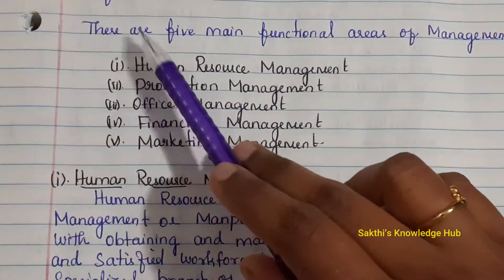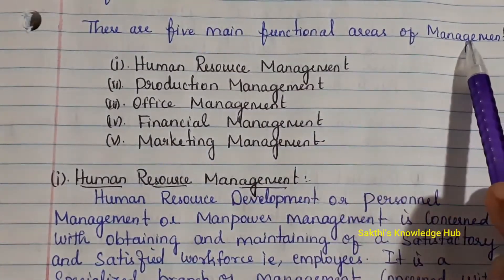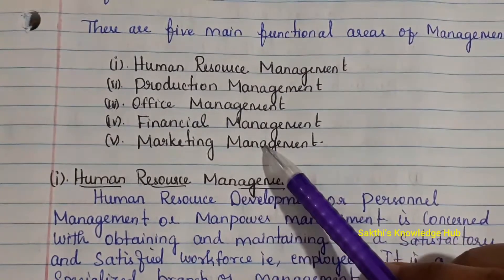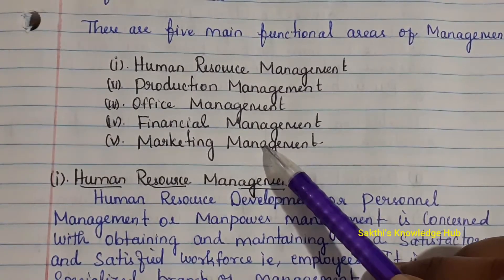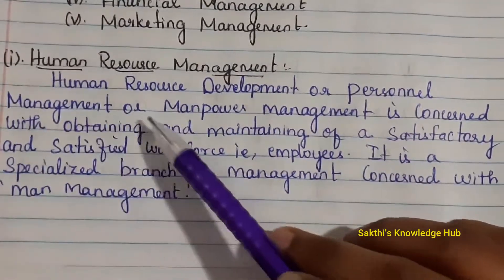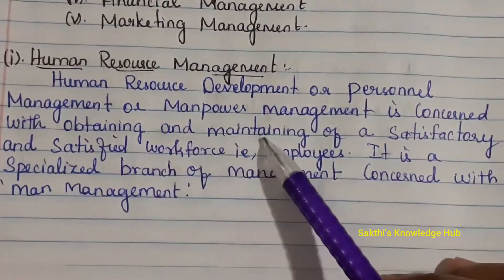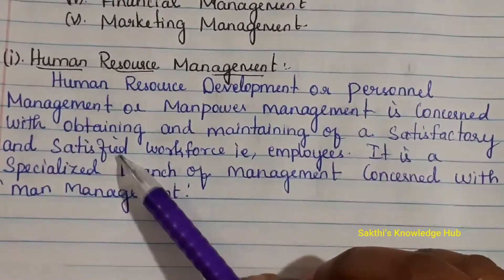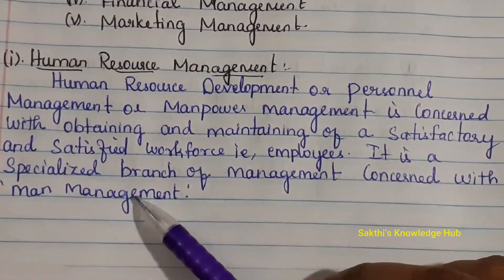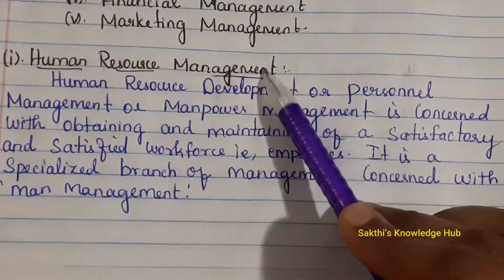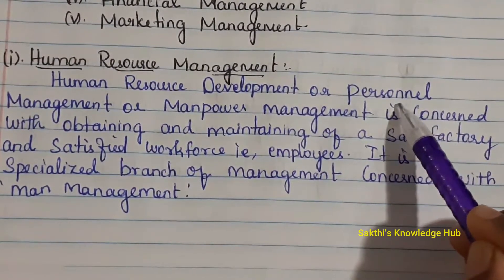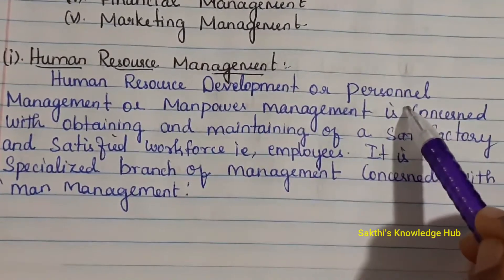The five main functional areas of management are: human resource management, production management, office management, financial management, and marketing management. The first we'll discuss in detail is human resource management. Human resource development, personal management, or manpower management is concerned with obtaining and maintaining a satisfactory and satisfied workforce — that is, employees. It is a specialized branch concerned with man management.